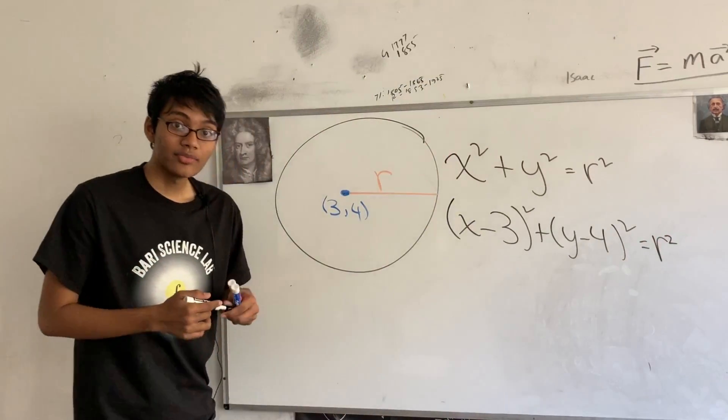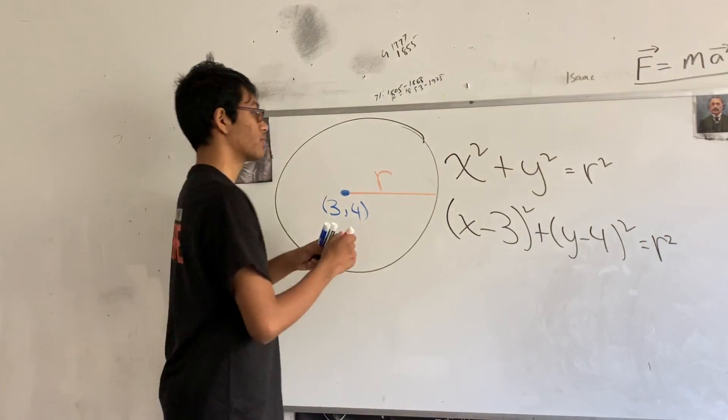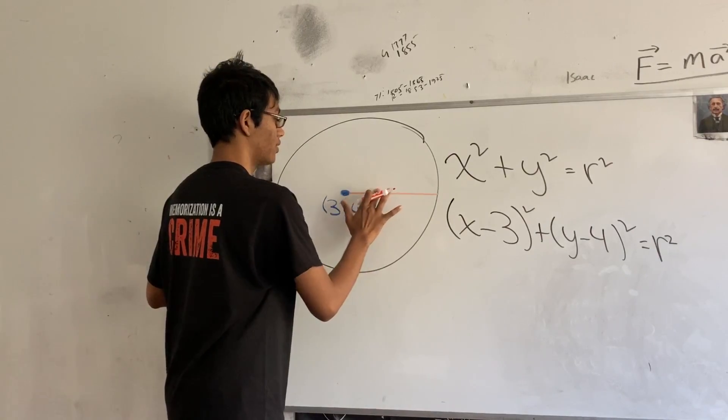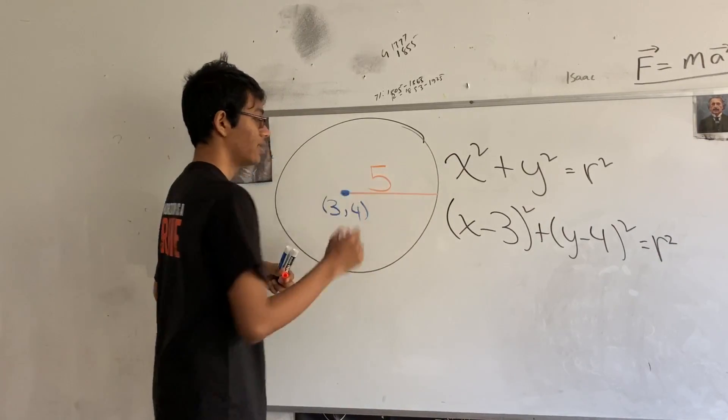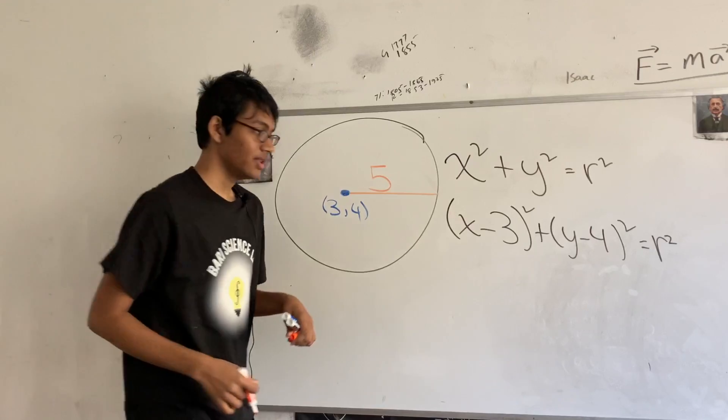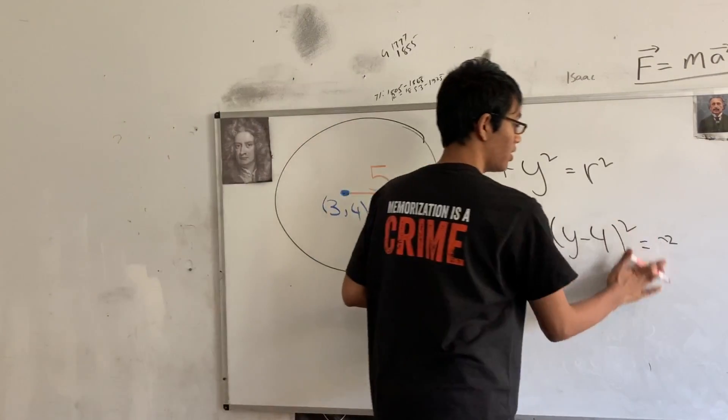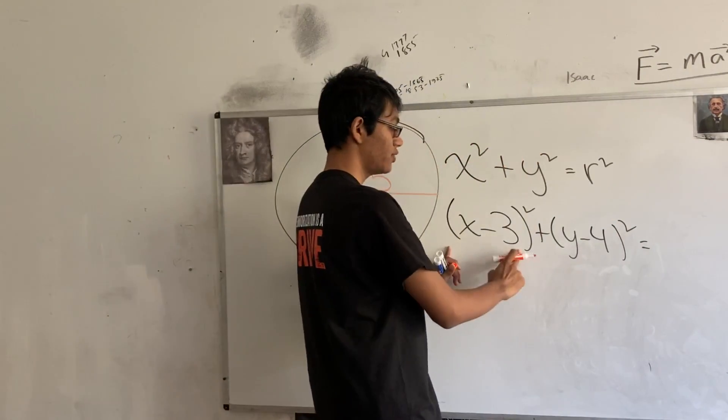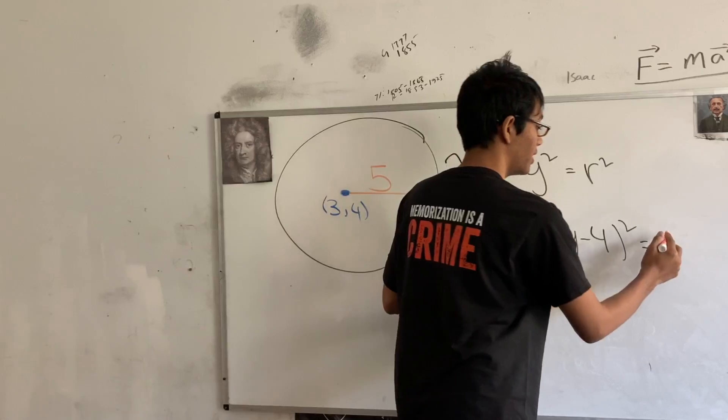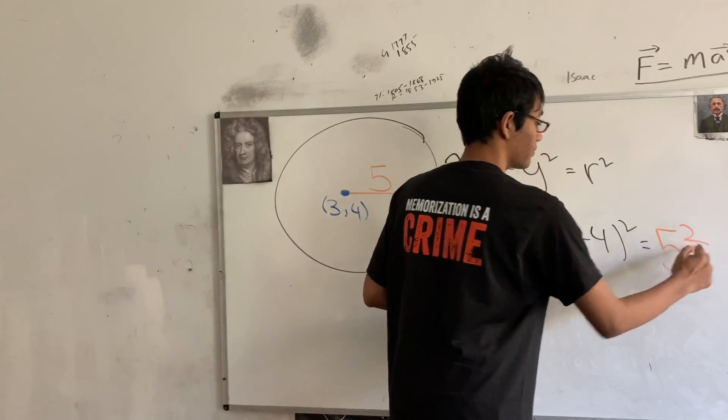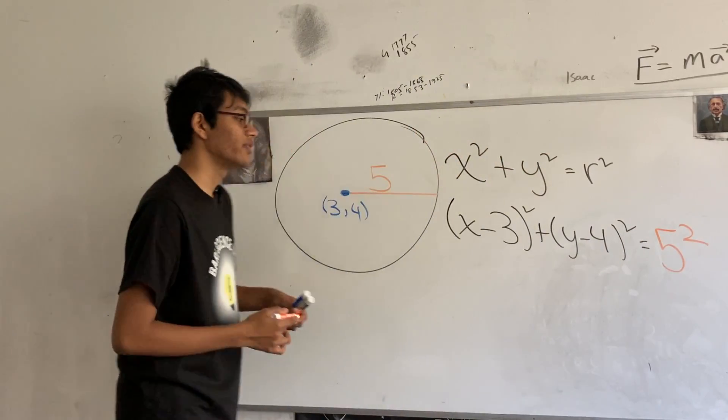And, of course, I can also make r a number. So, maybe this circle is, I don't know, 3 or, for the sake of a different number, 5 meters long, perhaps. This radius is 5 meters long. So, we would have x minus 3 squared plus y minus 4 squared is equal to 5 squared. And, of course, you can simplify that if you want.